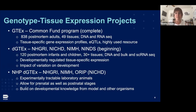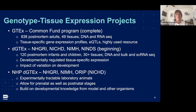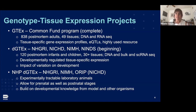This project will sit in the context of other genotype tissue expression projects, starting with GTEx, a common fund program which is now complete. Their recent paper used 838 post-mortem adults, 49 tissues, all with DNA and RNA-seq available. This has really led the way on our understanding in humans of tissue-specific gene expression profiles and expression QTLs, and is one of the most highly used resources that NIH provides.